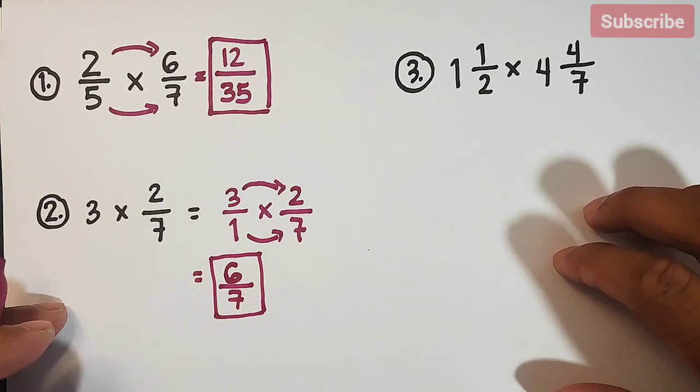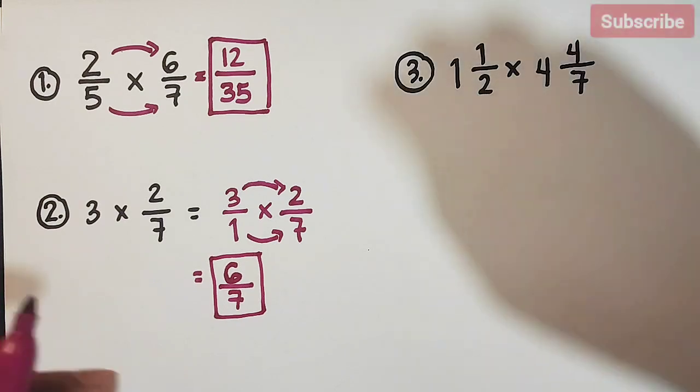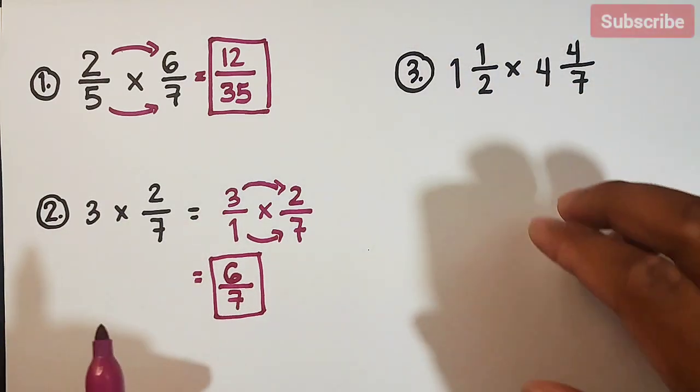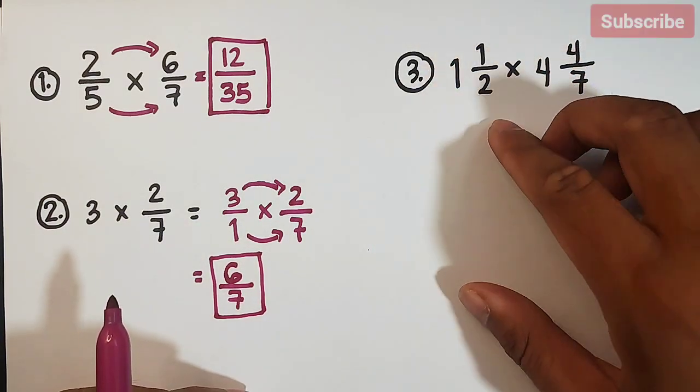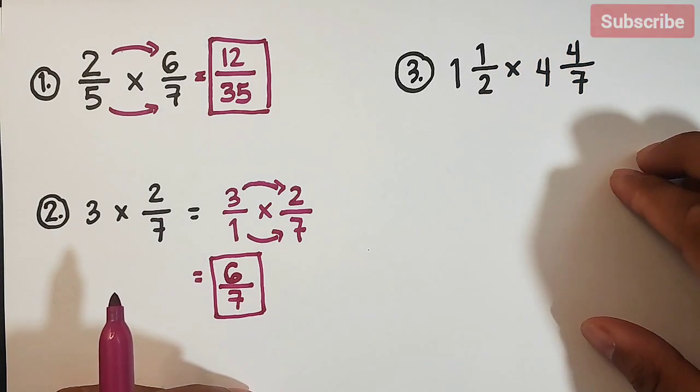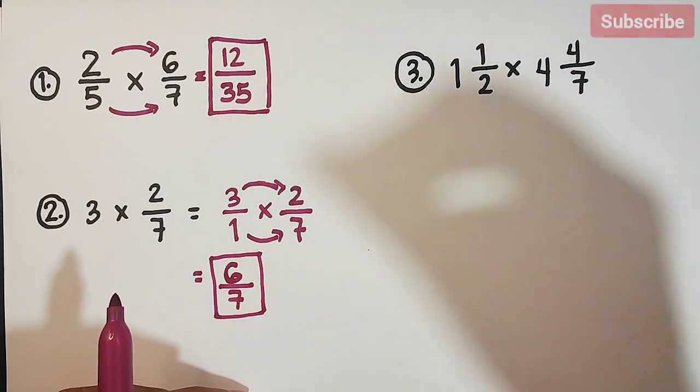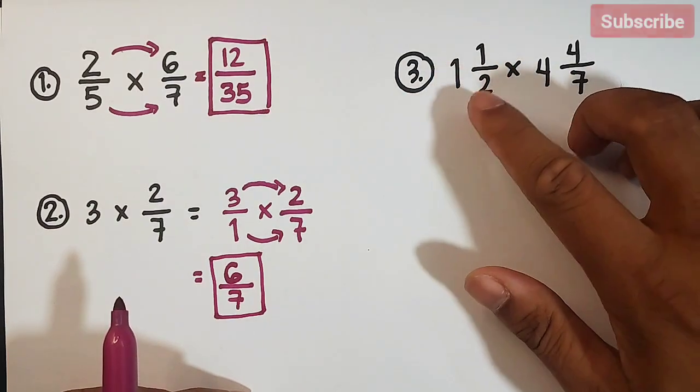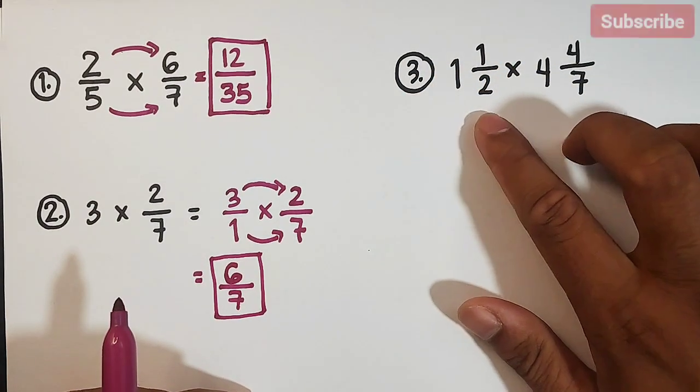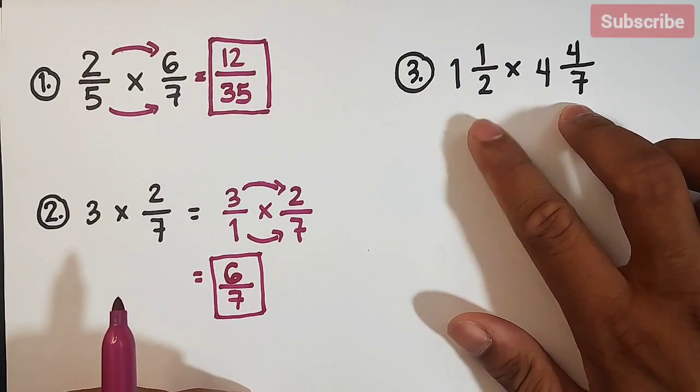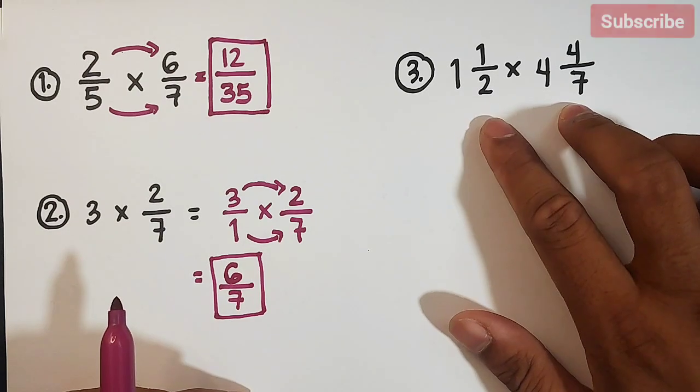Okay, so let's move on with number 3. In number 3, we have two mixed numbers: 1 and 1 over 2 times 4 and 4 over 7. If you're dealing with mixed numbers, what you need to do, guys, is to convert or to write these mixed numbers into improper fractions. So how do we do that?